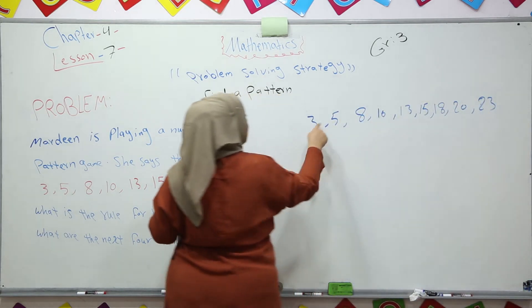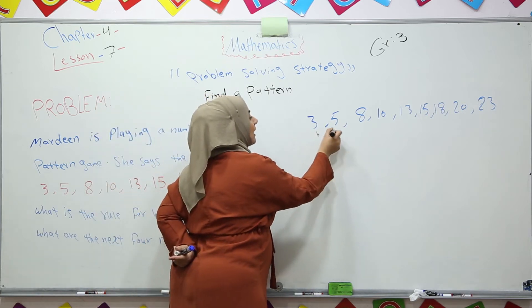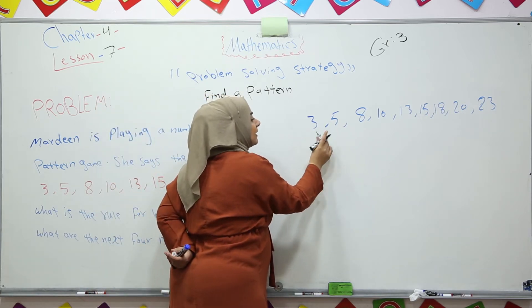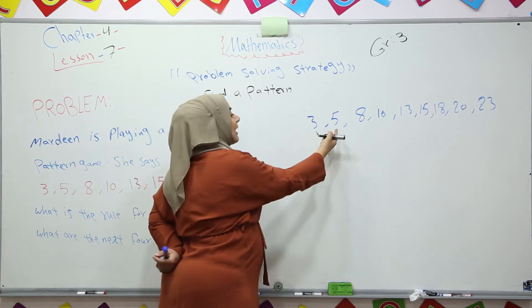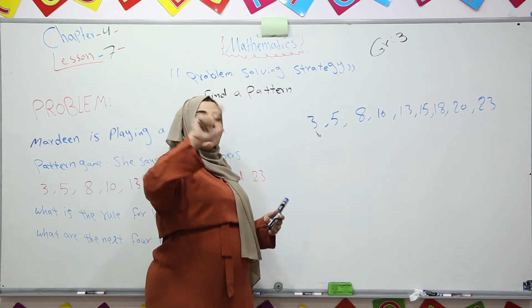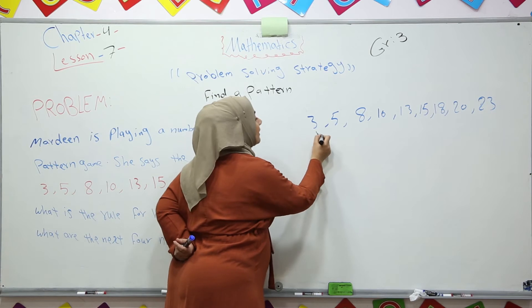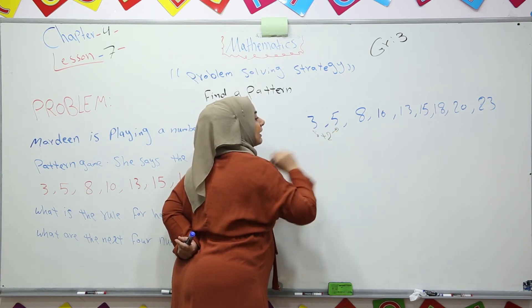Look at it. 3 and 5. We have 3, after 3 we have 5. 3 plus which number became 5? Look at here. 3, 4, 5. So if we add two numbers, we get number 5.